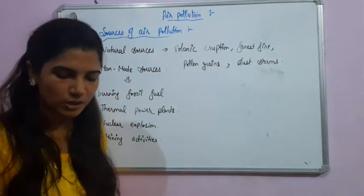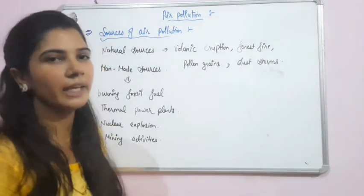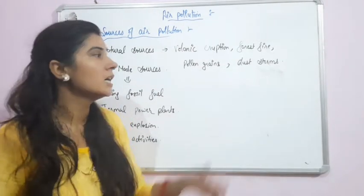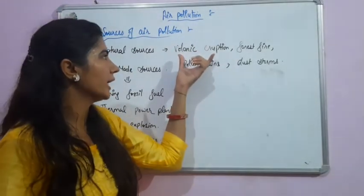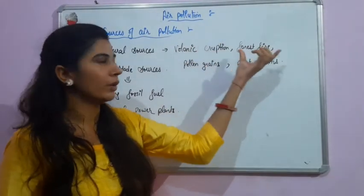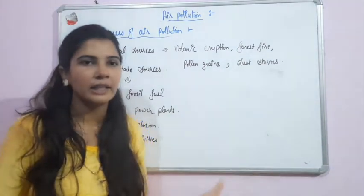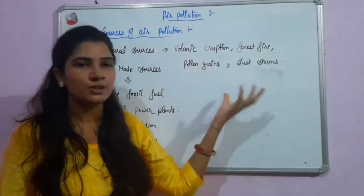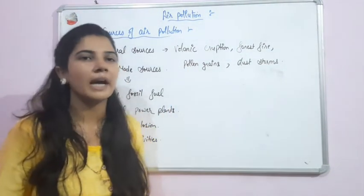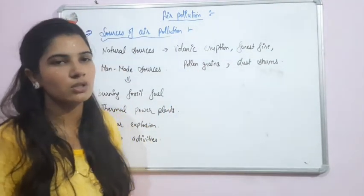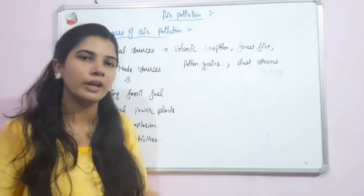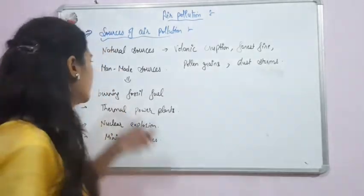If we talk about natural sources, there are some natural phenomena such as volcanic eruption, forest fires, pollen grains, dust, and storms. These are natural sources which are responsible for air pollution.